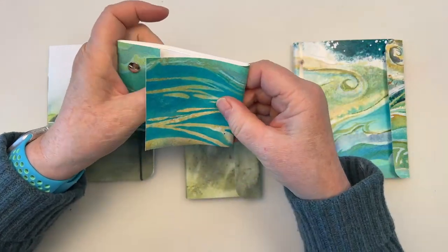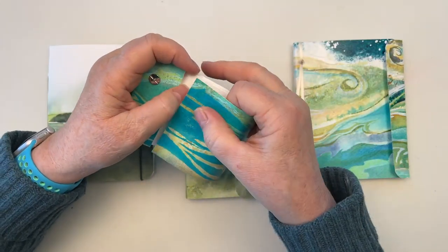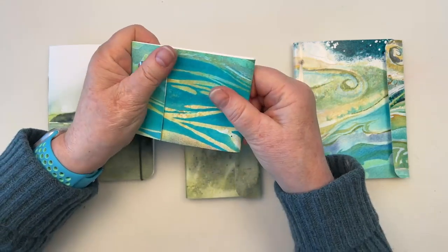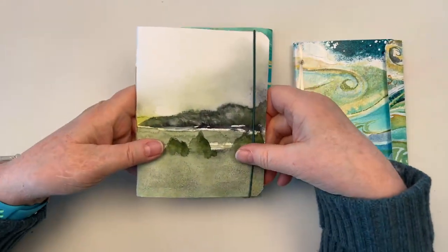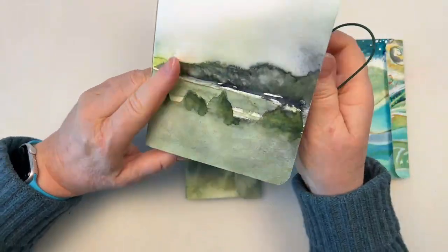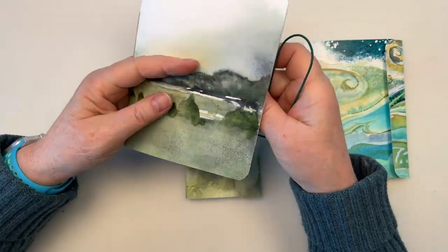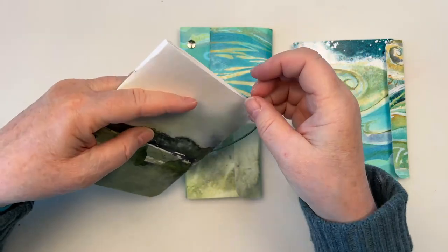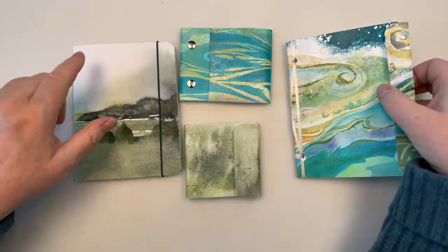If you're just starting out, this can help free you from feeling like you have one ugly sketch and it ruins the whole sketchbook. You can just make another one. And of course with this one you could pretty easily snip that thread, move pages around, add, delete, and sew it again.